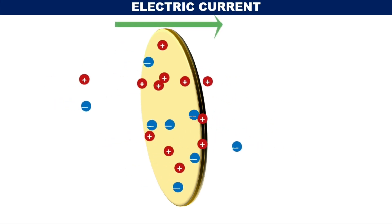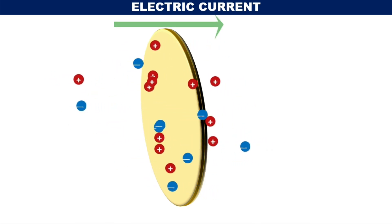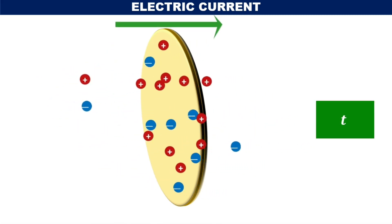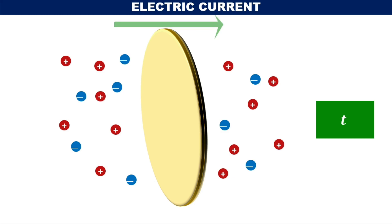These charges can move randomly across the given area — charges move to and fro at random. In a time interval of T seconds, we determine the net flow of charges across the given area in the reference direction. In order to do that, we first consider positive charges. Both positive and negative charges will cross the given area in the reference direction and also opposite to that.